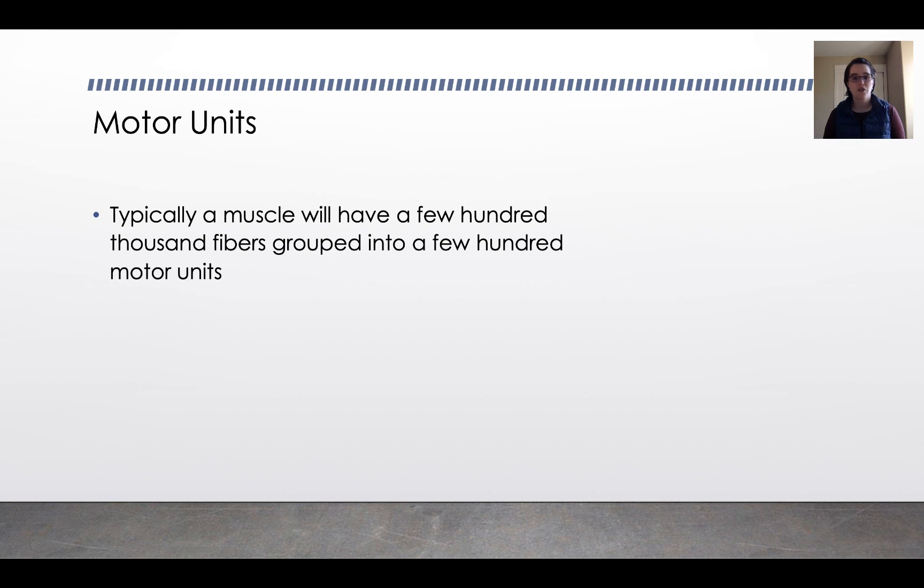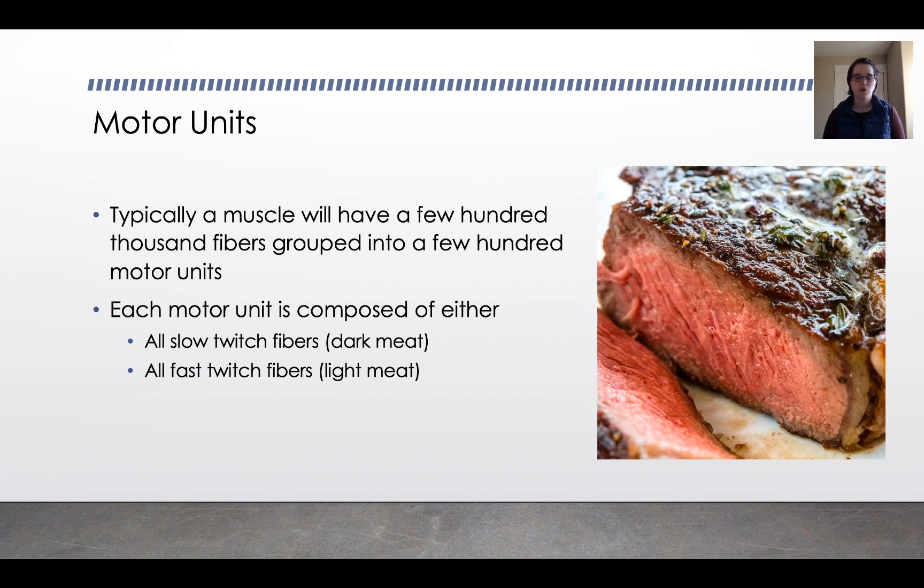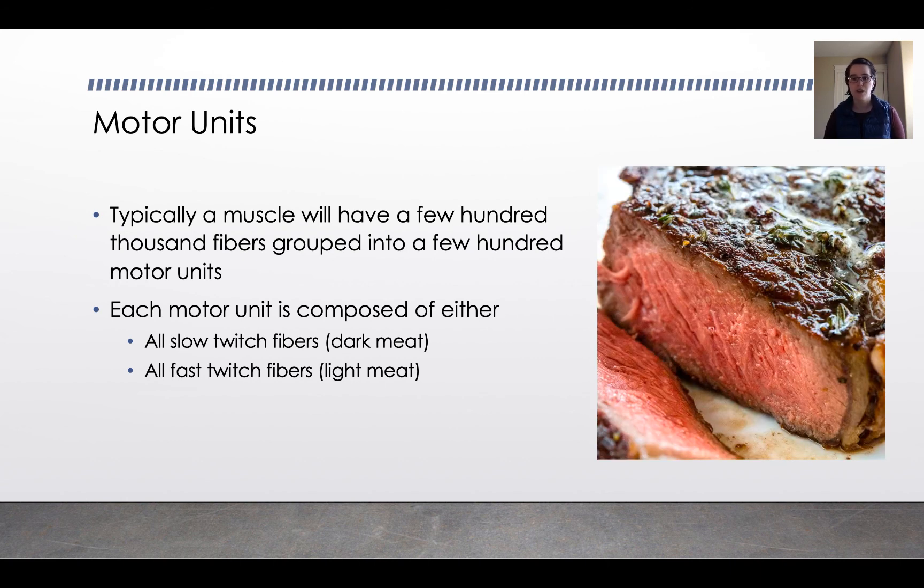So again, it's a trade-off. Do you want a lot of force or do you want to apply the force for a long time? Typically, a muscle will have a few hundred thousand fibers that are grouped into a few hundred motor units. Each motor unit is comprised either of all slow twitch fibers, so dark meat, or all fast twitch fibers, so light meat. Now, when you eat cow or pig, where's the light meat and where's the dark meat? It's pretty obvious in poultry. Poultry has muscles that are composed of all slow twitch fibers or all fast twitch fibers, and we talk about that as light and dark meat. In cows and pigs and also humans, you are crunchy and you taste good with ketchup, the muscle fiber types are mixed together, so you don't have muscles that are specialized for slow or fast twitch.